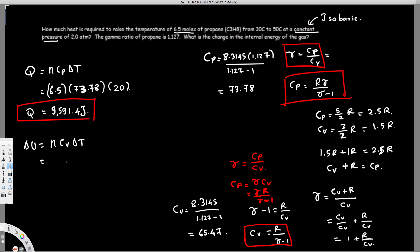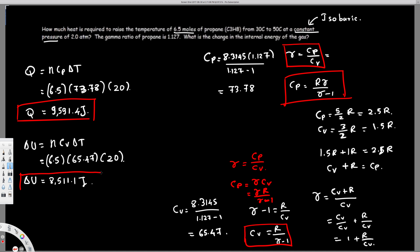Now we apply delta U equals N times CV times delta T: 6.5 moles multiplied by 65.47 multiplied by 20 (which is 50 minus 30). Calculating this gives delta U equals 8511.1 joules. That is our change in internal energy. That's how we do these kinds of problems — hope you find this video helpful, see you next time!